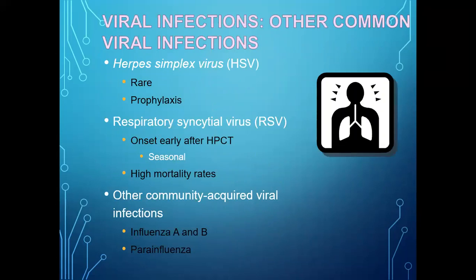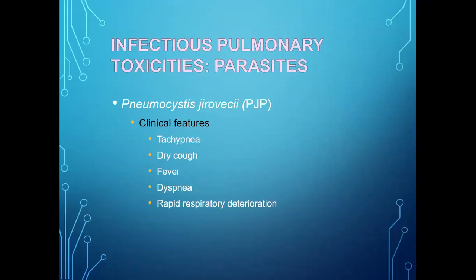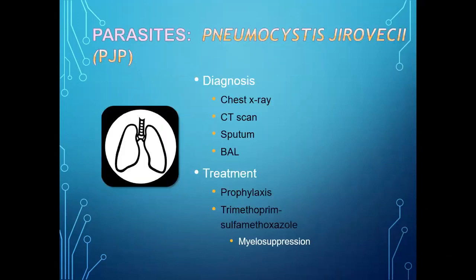Other viral causes include HSV, RSV, and community-acquired viral infections such as influenza. Parasitic cause: PJP (Pneumocystis jirovecii pneumonia). Clinical manifestations: tachypnea, dry cough, fever, dyspnea, and rapid respiratory deterioration. Diagnosis: CT scan, chest X-ray, and sputum test, BAL. Treatment: prophylaxis, specific treatment, and antifungal agents.